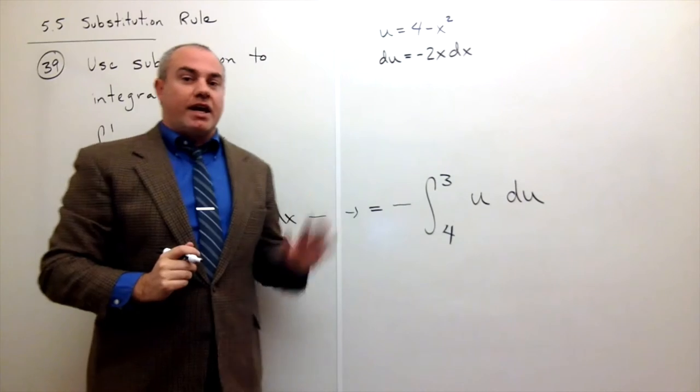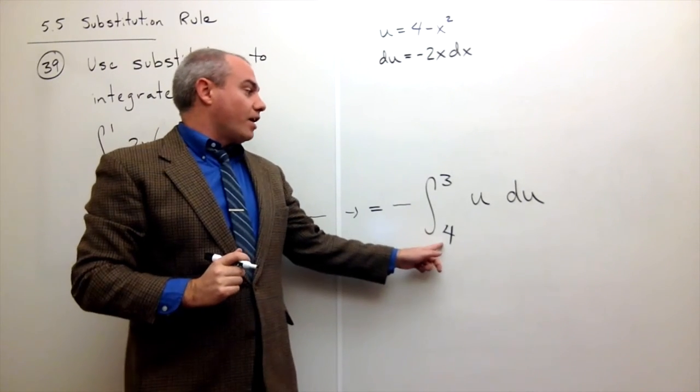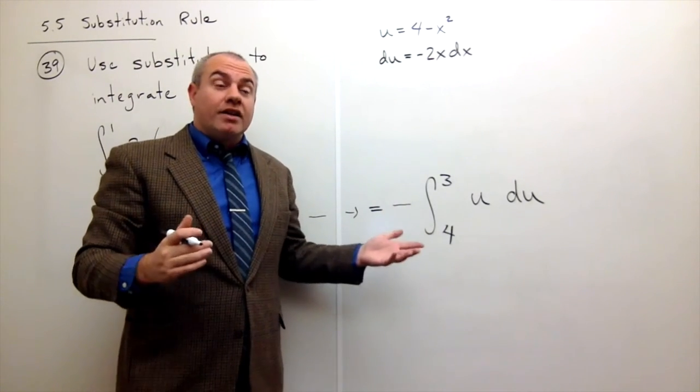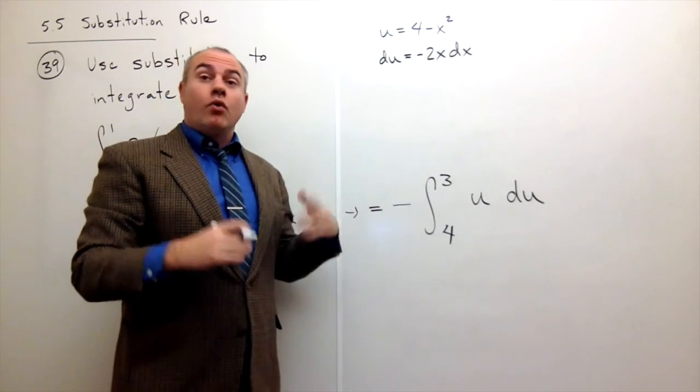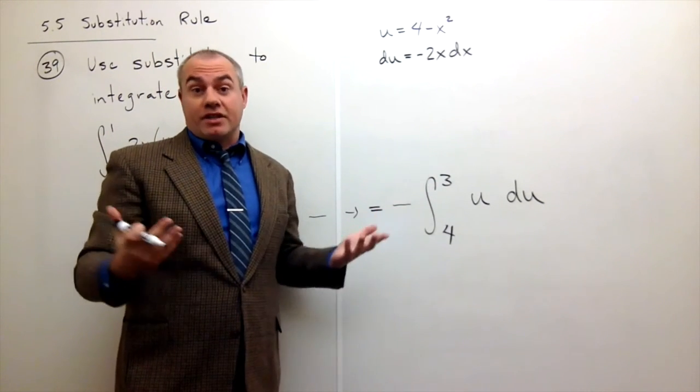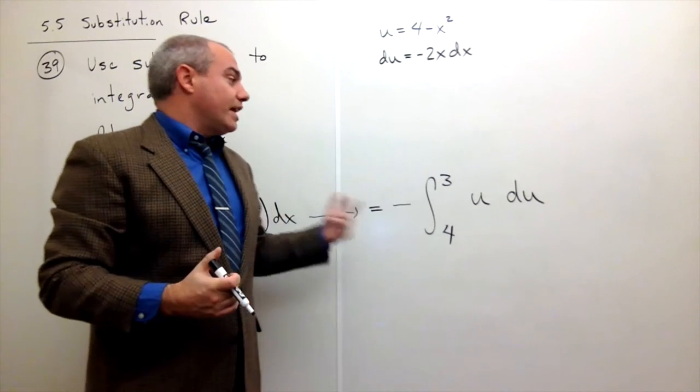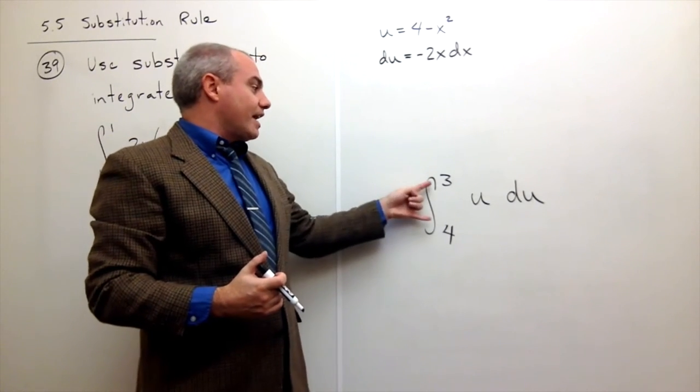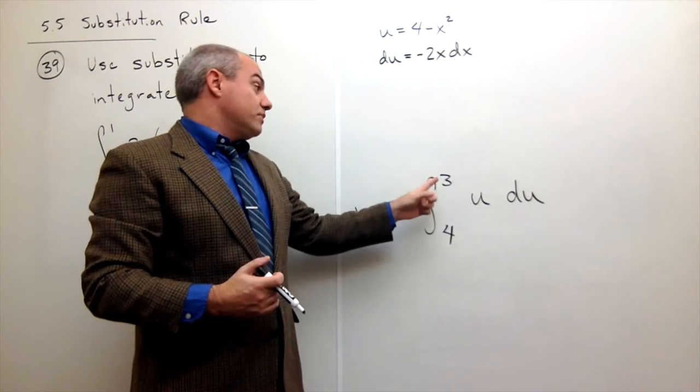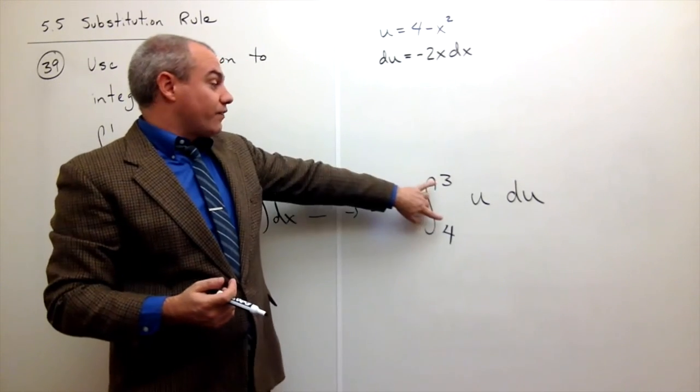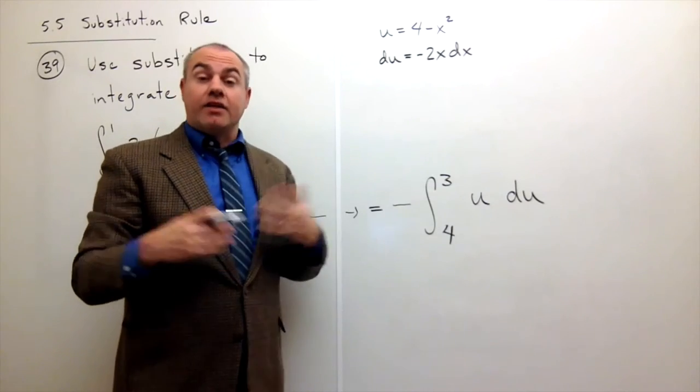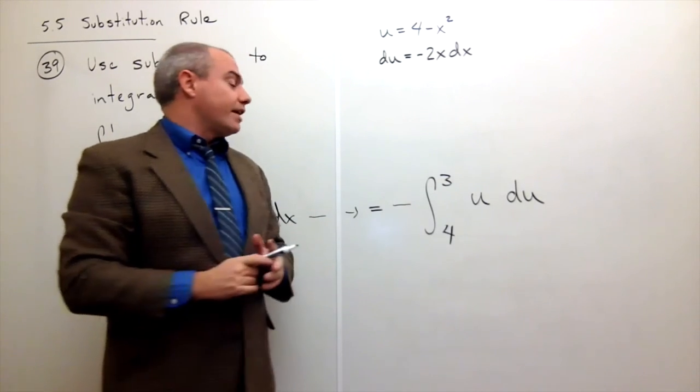Now, you might say, hey, the bigger number is on the bottom, and that's bad. Okay. If you don't like it, you can always flip these and make this positive. Or you can just leave it alone and everything's fine. So it's perfectly fine to take an antiderivative with the smaller number on top. If you don't like it, you can also flip it, make it negative, and that will work as well, whichever way you like.